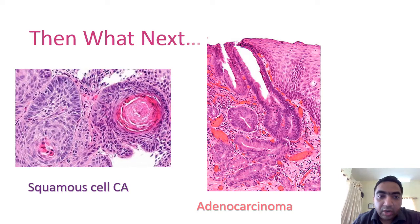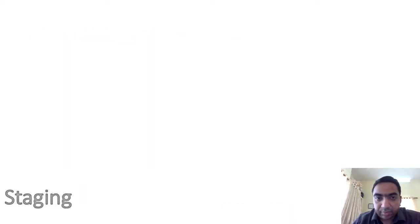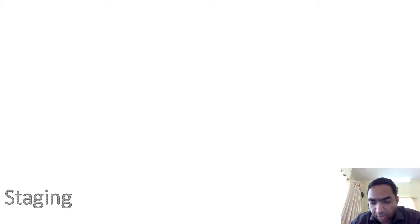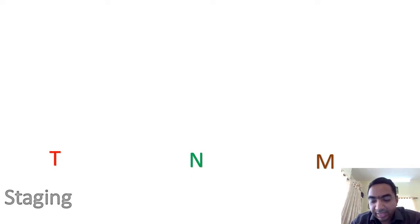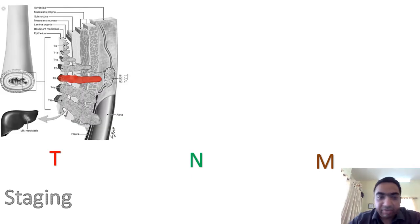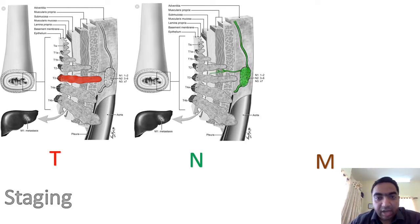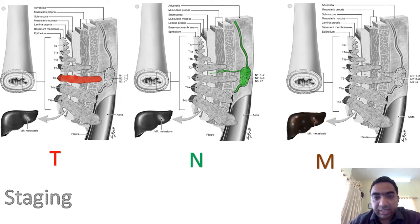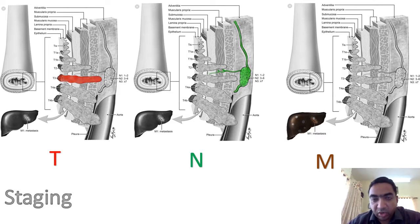The next step is staging of esophageal cancer using the classical TNM staging — tumor, nodes, metastasis. We identify how far the tumor is infiltrating the esophageal wall, how many lymph nodes are involved, and whether there is metastasis. Liver metastasis is common in esophageal tumors.